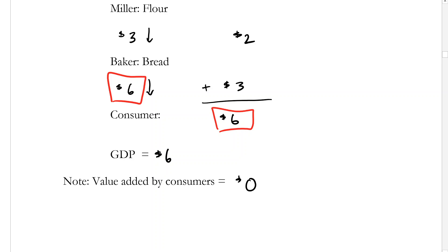So that's the definition of GDP — what it includes and what it doesn't include. In the next video, I will talk to you about the components of GDP: what do we include in a nation's total income, and where is all that money being spent? We're going to pick that up in the next video. I will see you there.